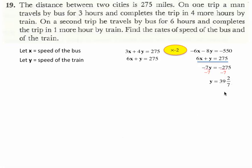So I'm going to replace that over here. My 6X plus Y equals 275 is now 6X plus 39 and two sevenths equals 275. I'm going to subtract 39 and two sevenths from both sides. And when I do, the 275 minus 39 and two sevenths becomes 274 and seven sevenths, take away 39 and two sevenths, and that gives me 235 and five sevenths.